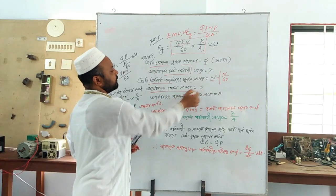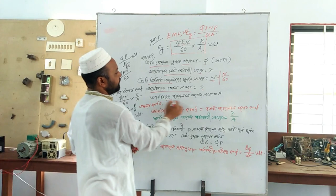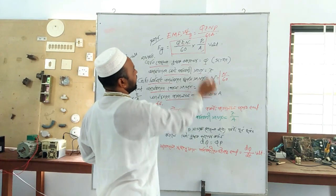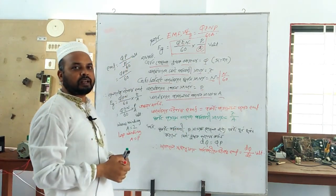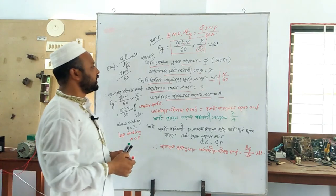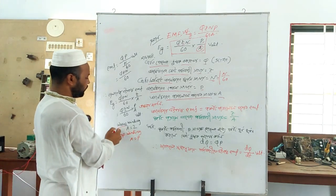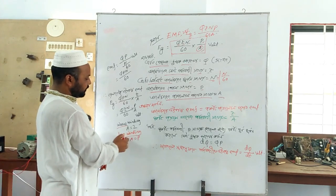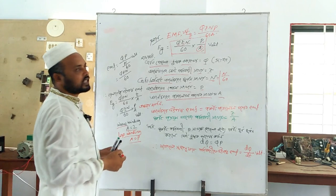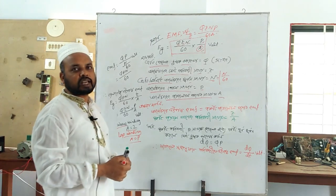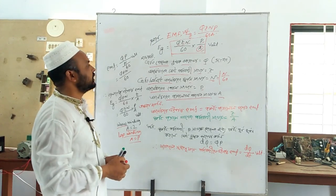The armature is P. This is 0, 2, 4, 6. The armature has parallel paths. We call it A. The armature parallel path — they are parallel paths.